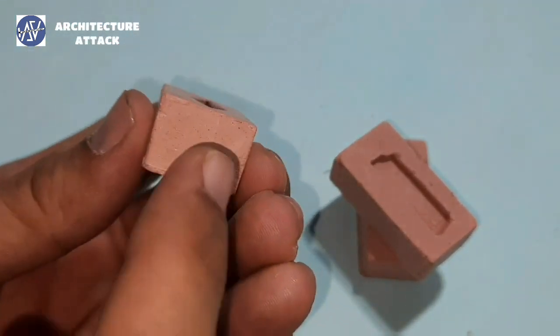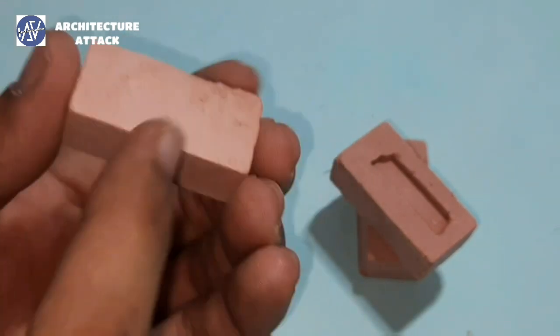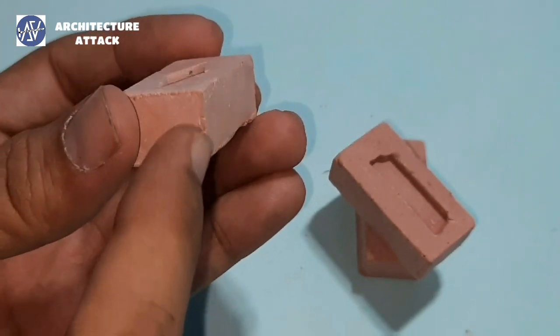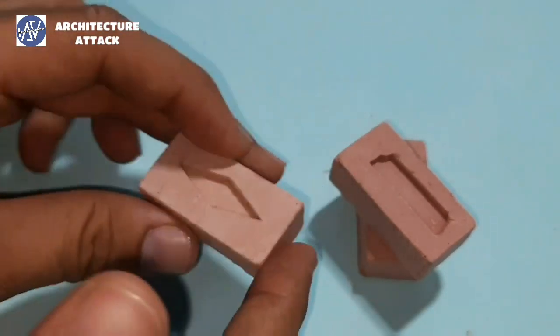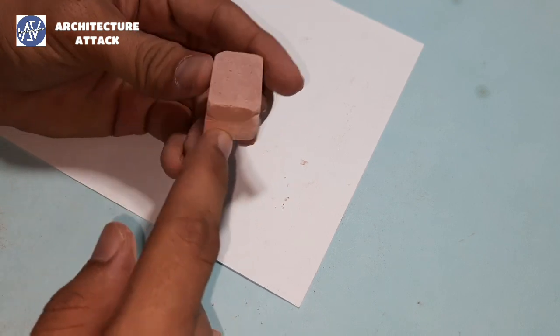So once again I'll tell you: this is header face, this is stretcher face, this is frog and this is bed. And these edges are called aris. So let's start header bond. As you know, this face of brick is known as header.